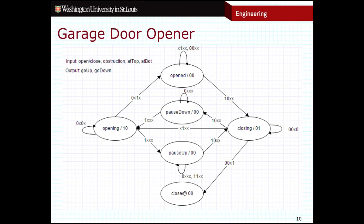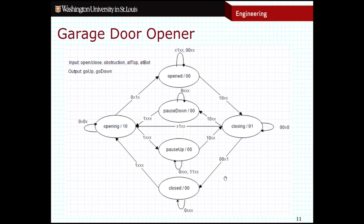And then finally, the closed state is the last one we need to talk about. If nobody pushes the button, we are just going to hang out in the closed state. If somebody does push the button, then we will transition to the opening state. That's what our final finite state machine looks like. Go back to our original specification and convince yourself that this finite state machine actually implements that specification. In the next video, we'll take a look at how we can take one of these finite state machines and turn it into a logic circuit.